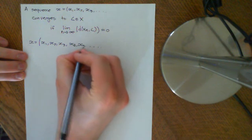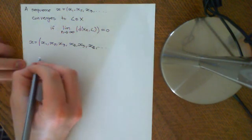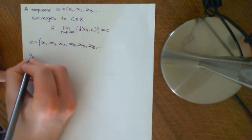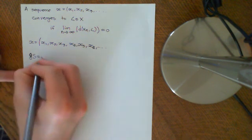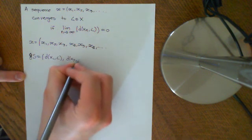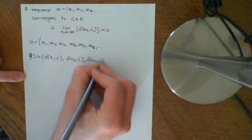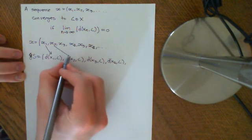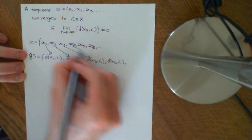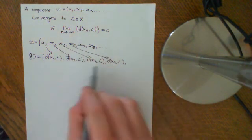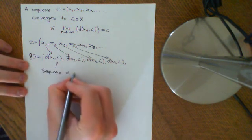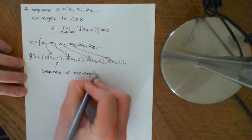For this sequence x = (x1, x2, x3, x4, x5, x6, ...), I can build a corresponding sequence — let's call it s — defined as: the distance between x1 and L, the distance between x2 and L, the distance between x3 and L, the distance between x4 and L, and so on. Each term of s corresponds to the matching term of x. This sequence s is a sequence of non-negative real numbers.